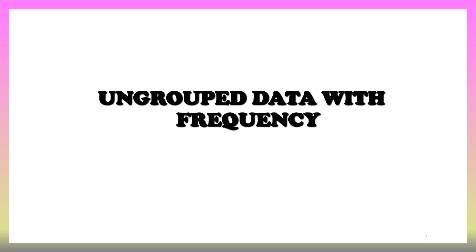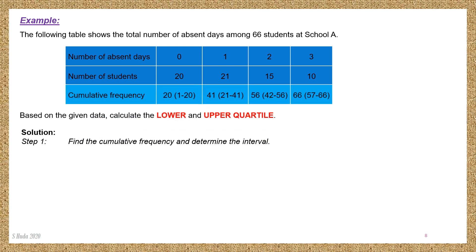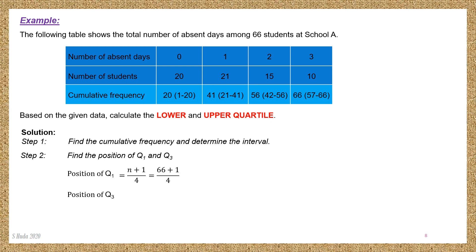Now we proceed to ungroup data with frequency. This is an example for ungroup data with frequency. Based on the data, calculate the lower and upper quartile. First step: find the cumulative frequency and determine the interval. Next, find the position of Q1 and Q3. Substituting N equal to 66, position of Q1 is 16.75.